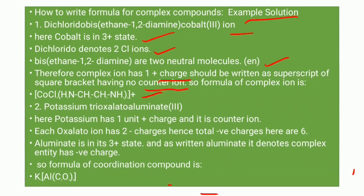The second example is potassium trioxalatochromate(III). Here potassium has 1 unit positive charge and it is the counter ion. Each oxalato ion has 2 negative charges. Hence, the total negative charges are 6 because the formula shows 3 oxalato ions.